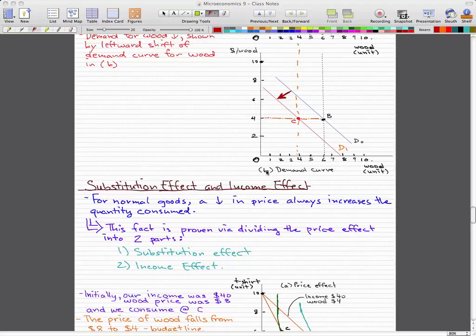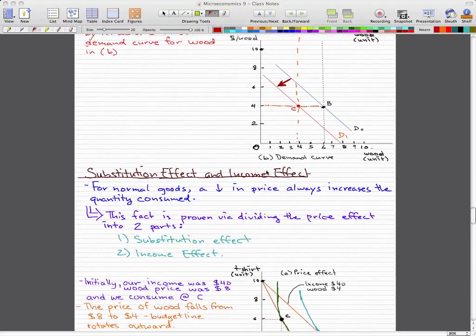We talked about changes in price and changes in income. In this video we're going to talk about the substitution effect and the income effect. Now for normal goods, we know that a fall in price always increases the quantity consumed. Something falls in price, you buy more of that. This fact could be proven by dividing the price effect into two parts: the substitution effect and the income effect.